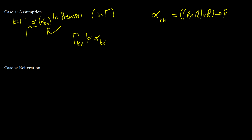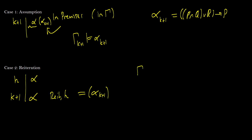Case 2: reiteration. On line k+1 we have some line h earlier in the proof where we wrote alpha, and later we can write alpha again through reiteration from line h — this equals alpha_{k+1}. This is valid because we can reiterate any time we want. If some step h entails alpha, then at step k that same gamma proves it, so if gamma proves alpha_h it also proves alpha_{k+1} by reiteration.